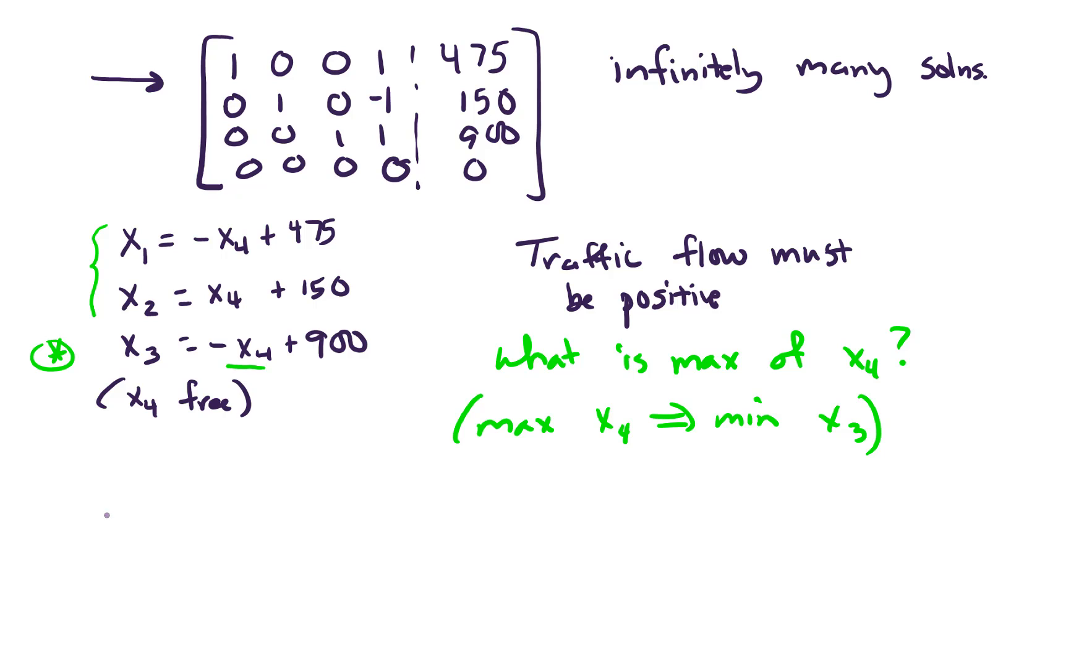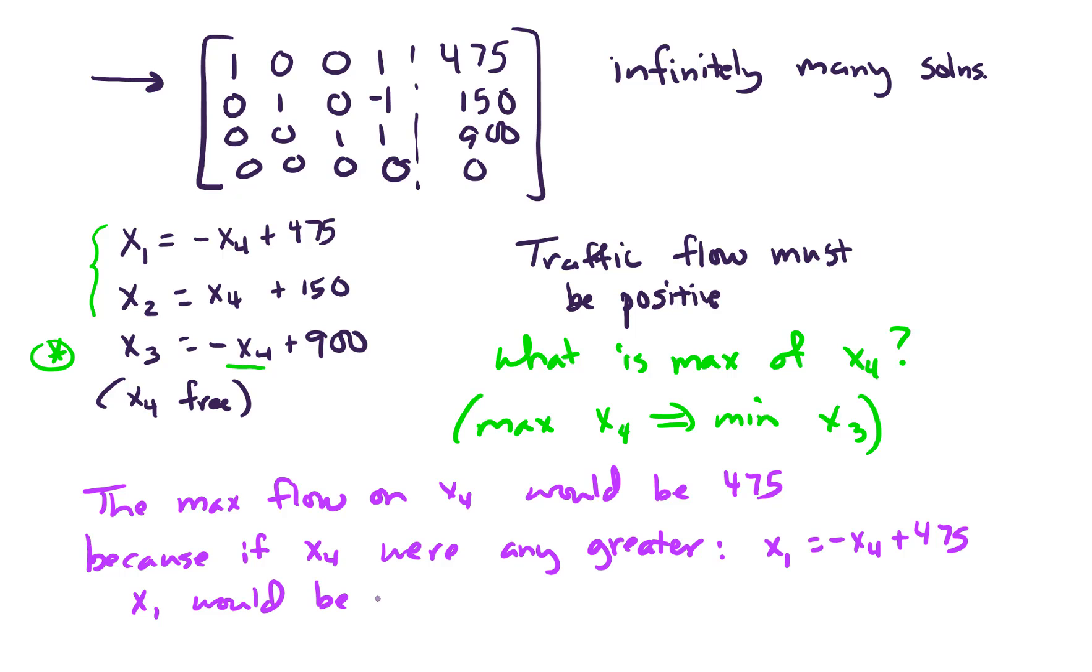So let's write that down. The max flow on X4 would be 475, because if X4 were any greater, then the equation X1, which is negative X4 plus 475, if X4 were any greater, would be negative. And we can't allow X1 to have negative traffic flow. So the max flow on X4 would be 475.